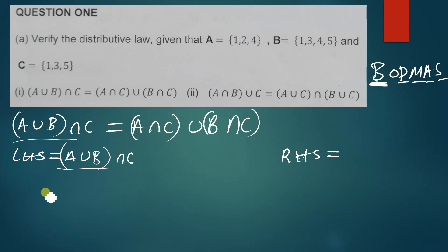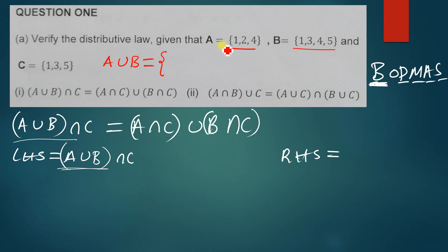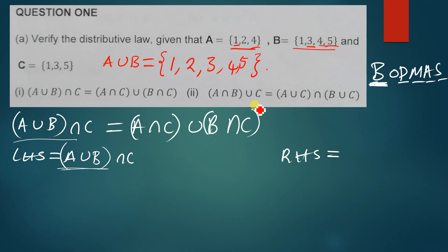The left hand side is A union B intersection C. What we have in the brackets is A union B. To find A union B, we simply combine set A and set B, making sure we don't write the same element twice. So A union B equals one, two, three, four, five — since four appears in both sets we write it once.